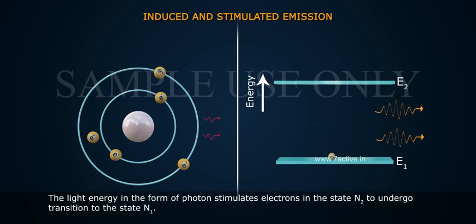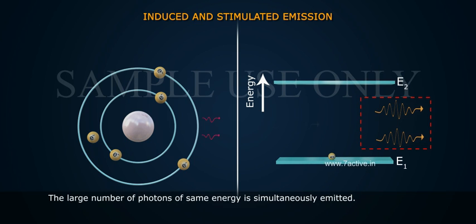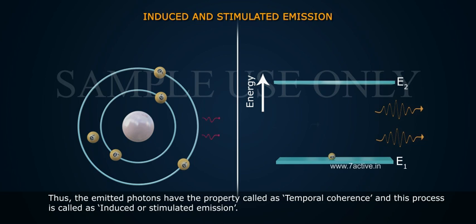The light energy in the form of photon stimulates electrons in the state N2 to undergo transition to the state N1. The large number of photons of the same energy is simultaneously emitted. Thus, the emitted photons have the property called as temporal coherence, and this process is called as induced or stimulated emission.